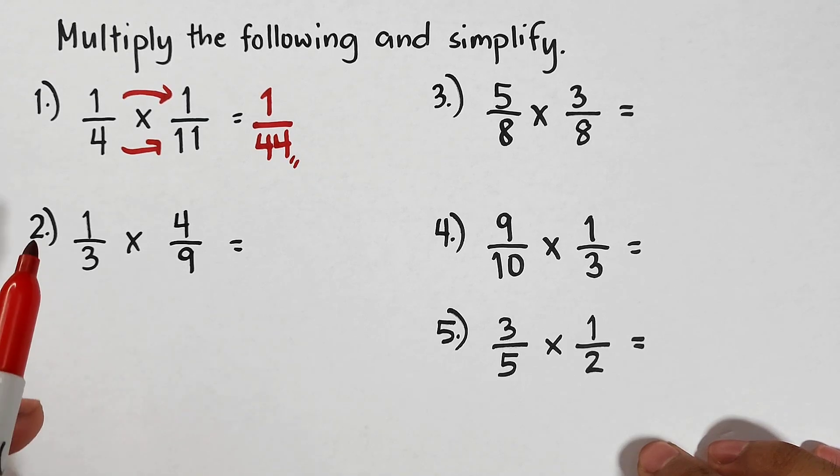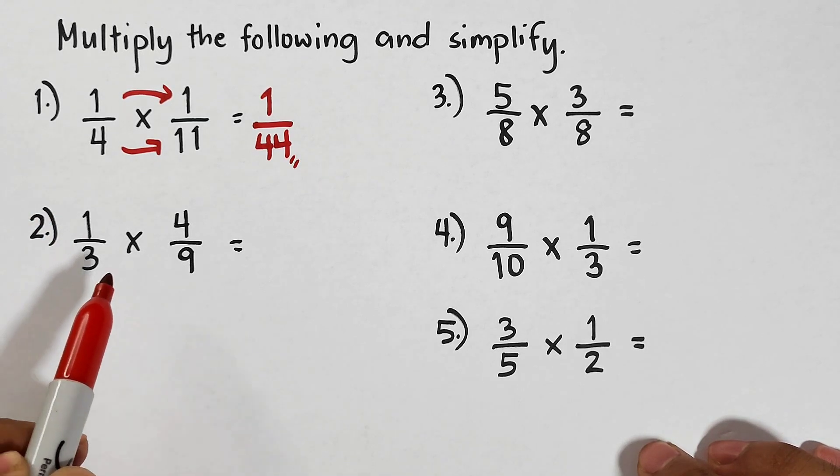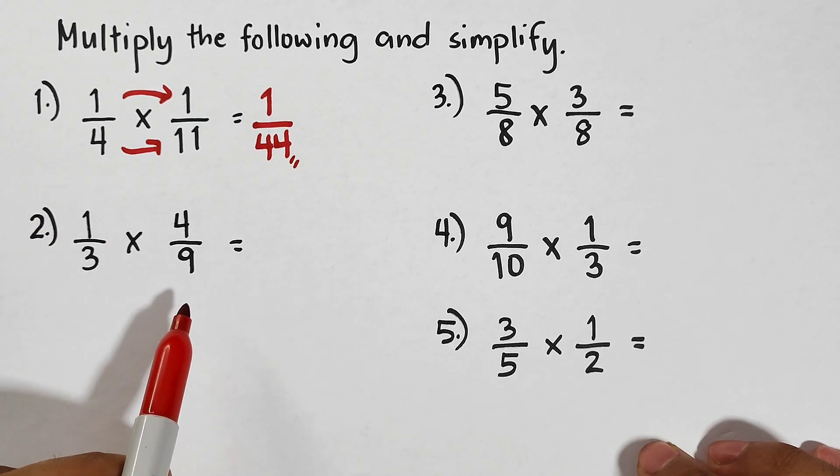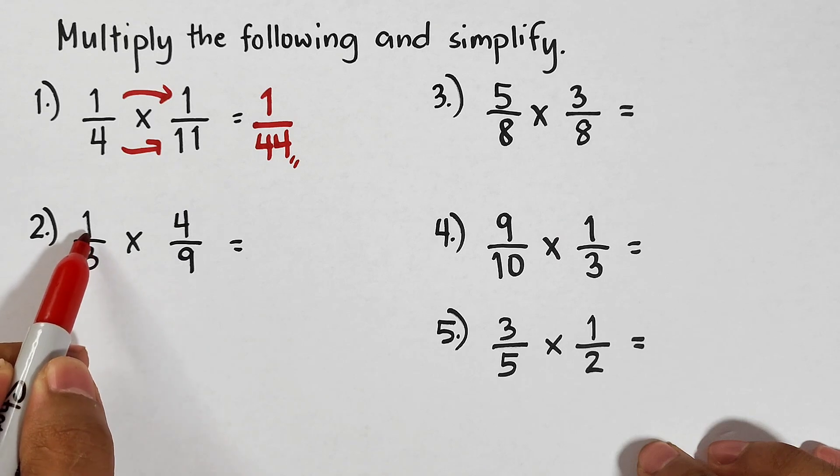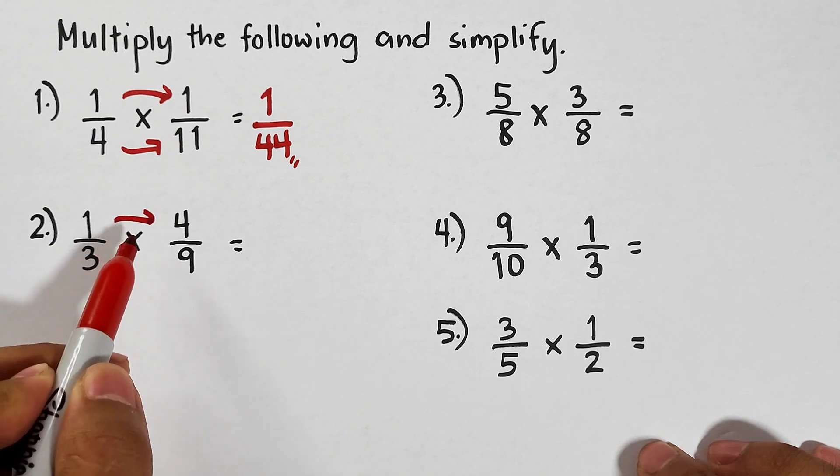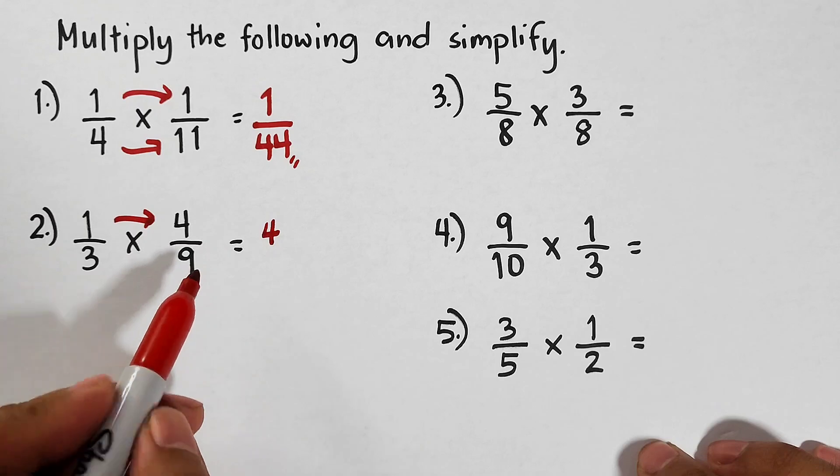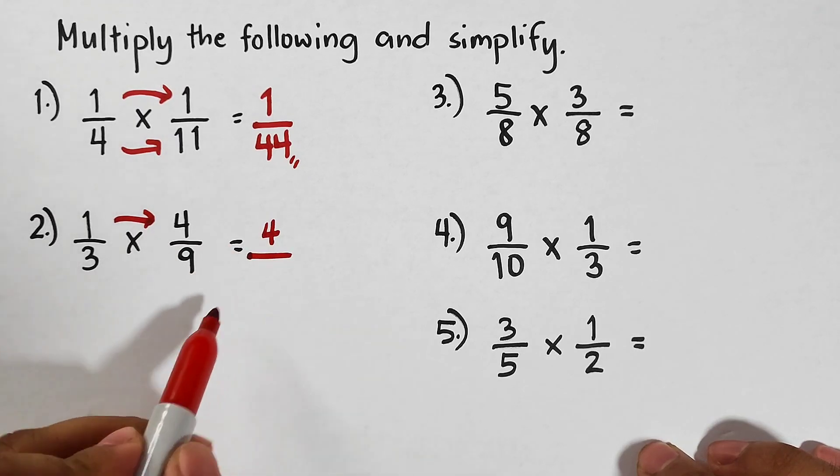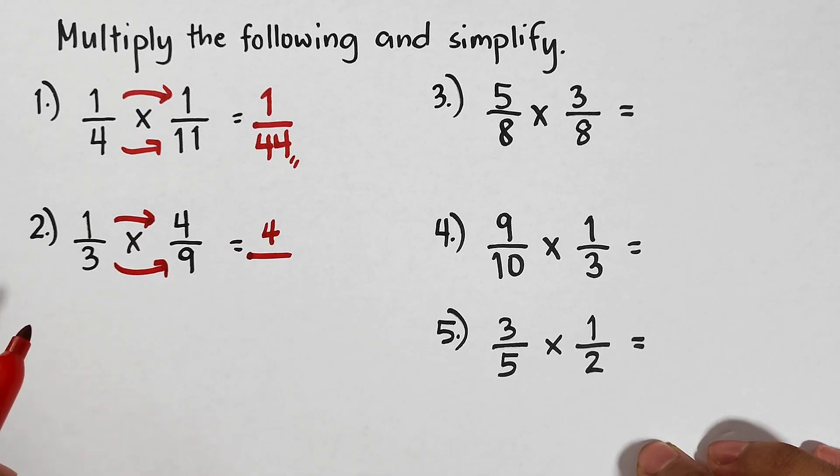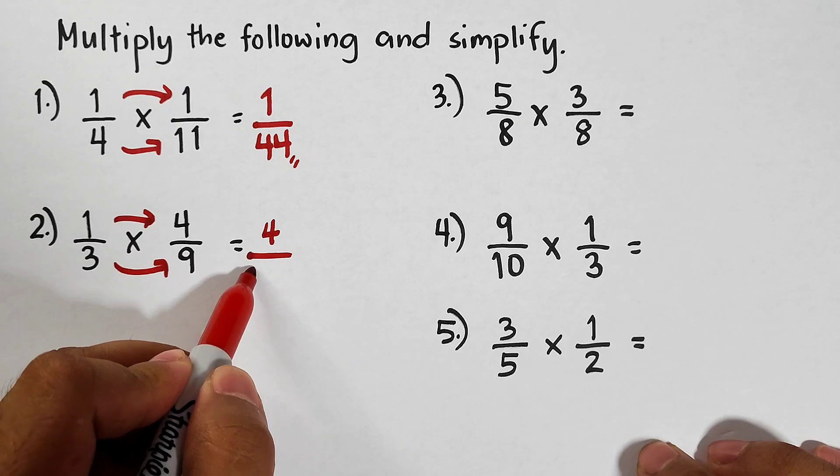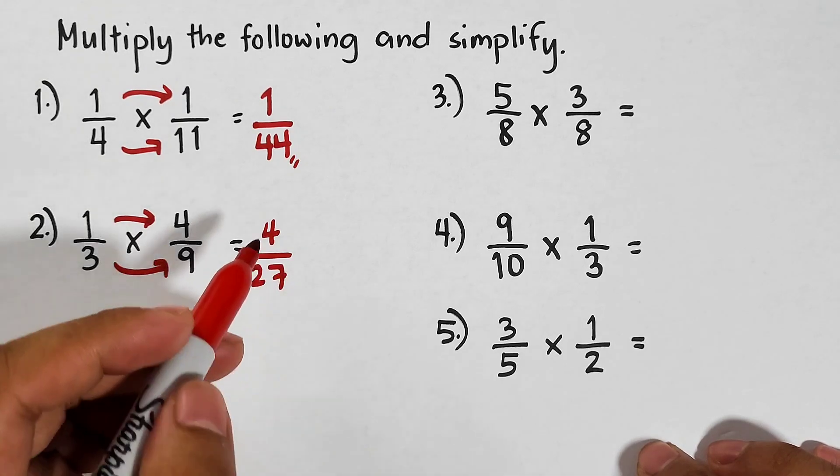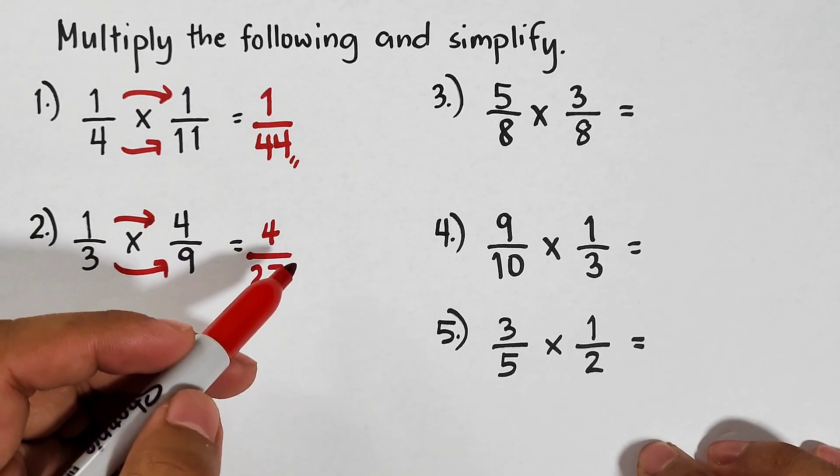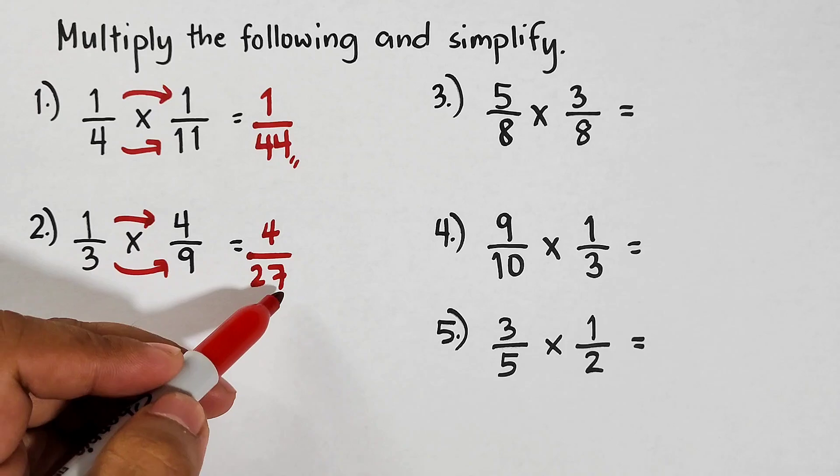In number two we are given 1/3 times 4/9. The numerators are 1 and 4. Multiply them, we have 4 as their product, over 3 times 9, that would be 27. This fraction 4/27 is already in simplified form, so this is our answer.